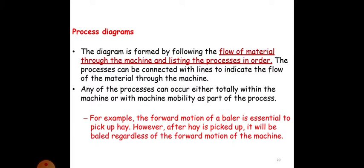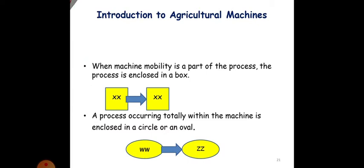Process diagrams. The diagram is formed by following the flow of material through the machine and listing the processes in order. The process can be connected with lines to indicate the flow of material through the machine. Any of the process can occur either totally within the machine or with the machine mobility as a part of process. When the machine mobility is part of the process, the process is enclosed in the box. And the process occurring together within the machine is enclosed in a circle or an oval.